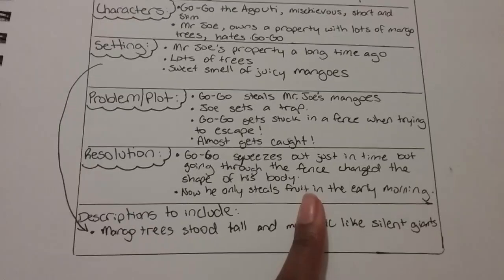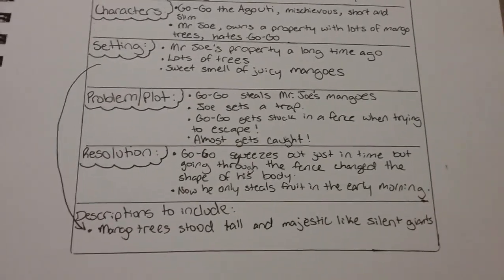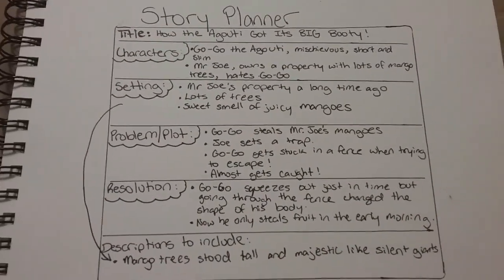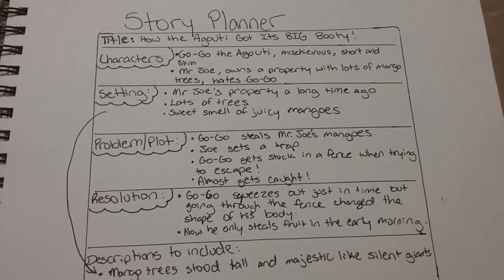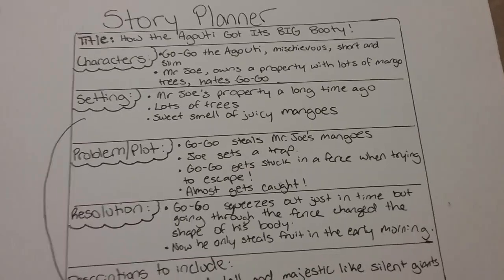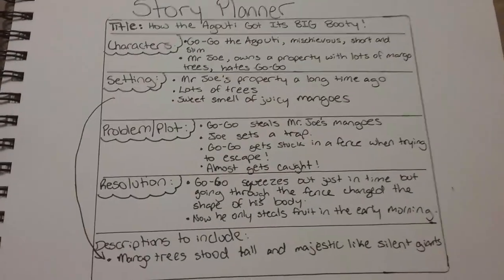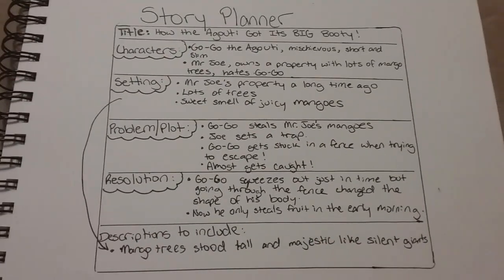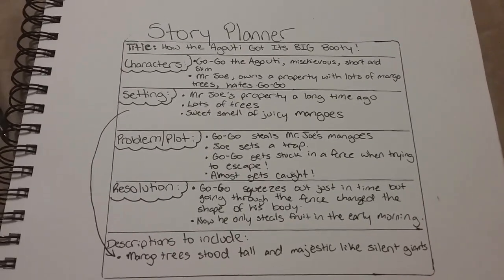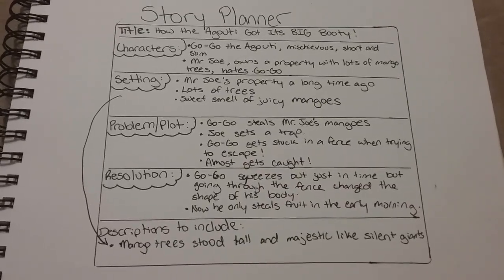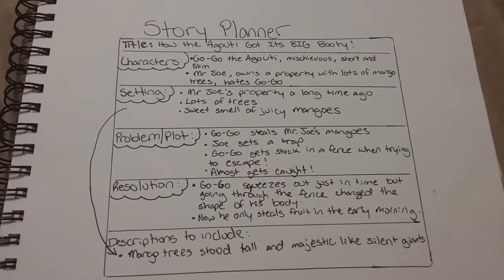I wanted it to be kind of true to life because usually I see agoutis in the early morning or in the evening just before the sun goes down. So there you have it — that's my planning sheet. Notice I haven't written paragraphs — it's just bullet points, with a few sentences here and there. They're not going to be copied straight into my story; they just serve as a reminder to me of what I want to include. Your independent task today is to create your own story planner using one of the prompts I've given you, or a prompt you come up with on your own.